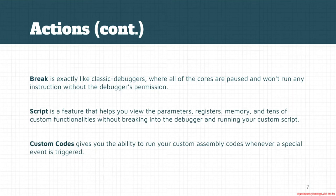Another action for HyperDbg is custom codes. Custom codes is also a powerful feature that gives you the ability to run your custom assembly codes whenever a special event is triggered. You define some assembly codes and after that, whenever the event is triggered, your assembly codes will execute in VMX root mode, which is the highest available permission in this debugger.